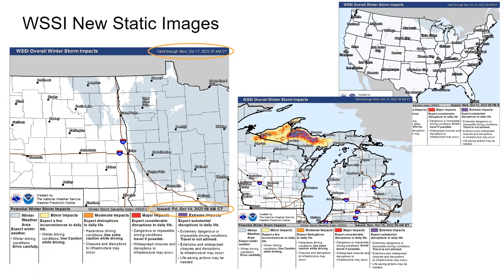A couple other things before we move on to PROB: the static images are completely overhauled this year. They now include the full definition set, and we've done a big quality-of-life improvement — the valid times and issued times are now all time zone aware. So if your office is in the central region, you'll see times reflected in central time; mountain time zone will show mountain time; eastern time zone will remain the same. Here are a couple of recent images from earlier in October — we had that early snow load case across northern Michigan that really lit up the algorithms with some leaves still on the trees.